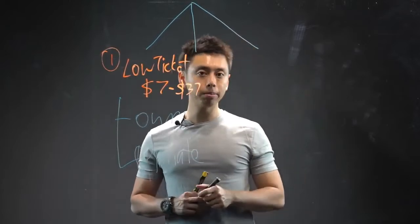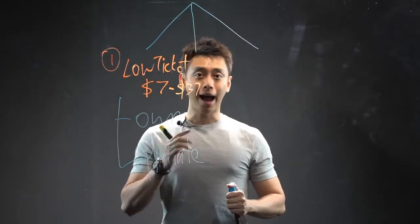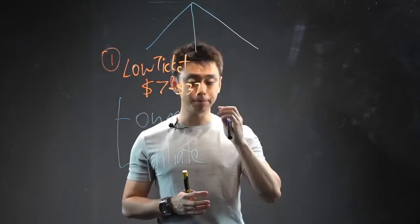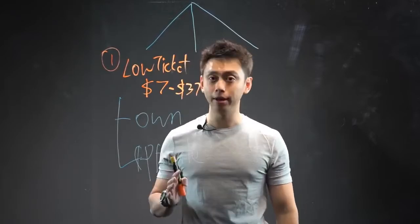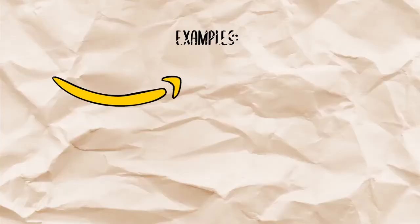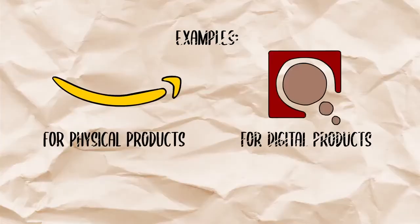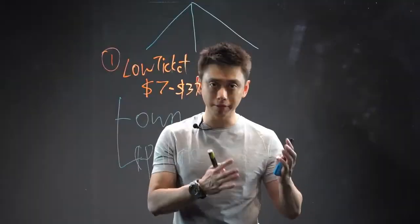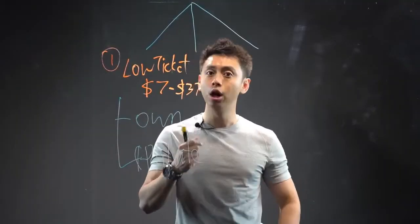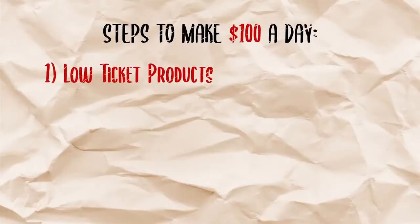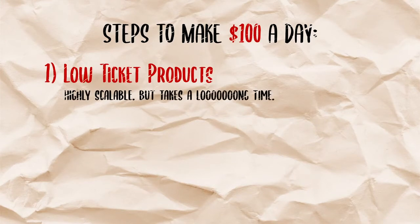So think about whatever marketplace that you are in, 100% guaranteed the biggest platforms in that market, they have an affiliate program. Whether it's Amazon for physical products, whether it's ClickBank for digital products, whether you are in the service-based industry, whether it's in travel, they all have an affiliate program. The upside to this is that it is highly scalable, but the downside to this is that this is not gonna happen overnight.